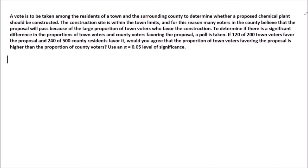If 120 of 200 town voters favor the proposal and 240 of 500 county residents favor it, would you agree that the proportion of town voters favoring the proposal is higher than the proportion of country voters? Use an alpha of 0.05 level of significance.